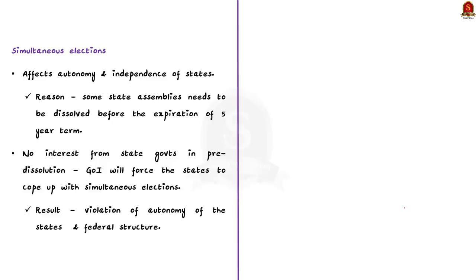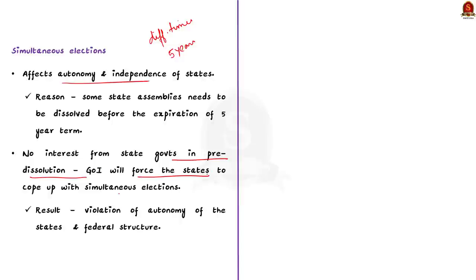But bringing in simultaneous elections would affect the autonomy and independence of state governments. For example, elections to various state legislative assemblies are currently conducted at different times based on their respective 5-year terms. If you want to conduct simultaneous elections, some state assemblies have to be dissolved earlier — before the expiration of their term. Obviously, none of the state governments would be interested in pre-dissolution of the assembly. This makes the central government force states to cope with simultaneous elections, which would probably end up violating the autonomy and independence of state governments, affecting the federal structure as a whole.